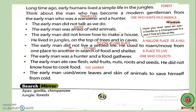The early man did not live a settled life. Underline 'settled' — its meaning is 'to stay at one place.' He used to roam or move from one place to another in search of food and shelter. Underline 'search' — its meaning is 'to find.' Underline 'shelter' — its meaning is 'a place to live.'